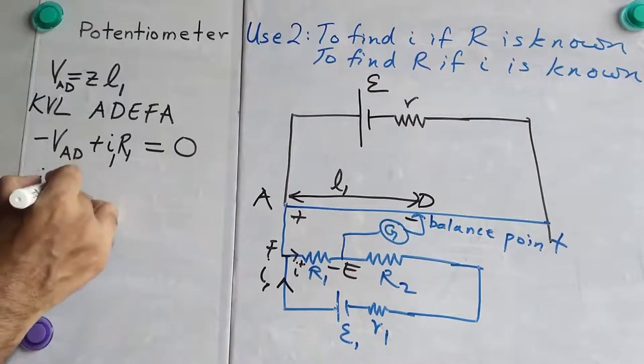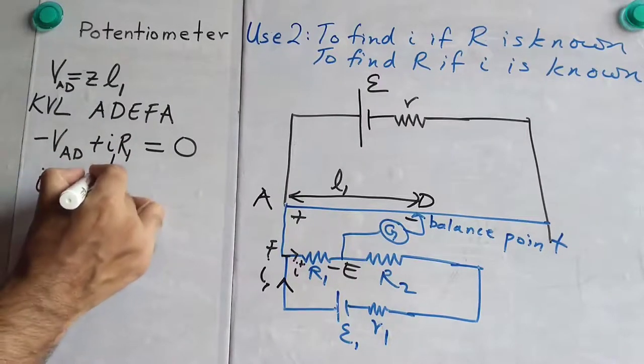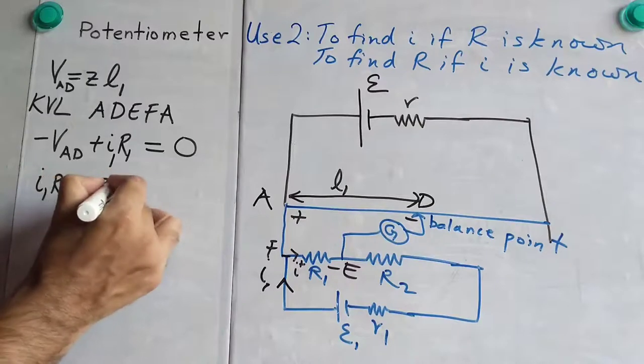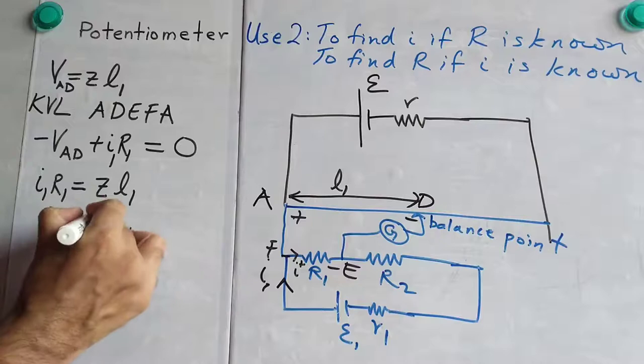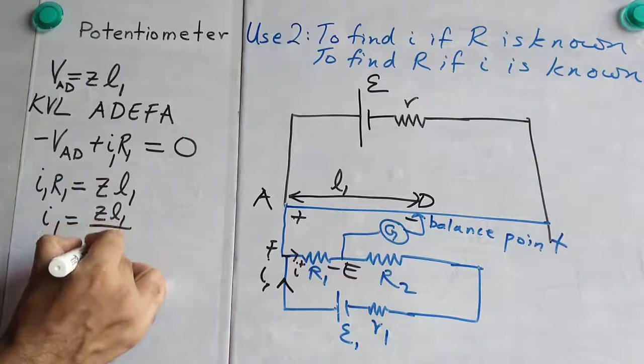So, I1, R1 will be equal to Z into L1. And, therefore, I1 is ZL1 by R1.